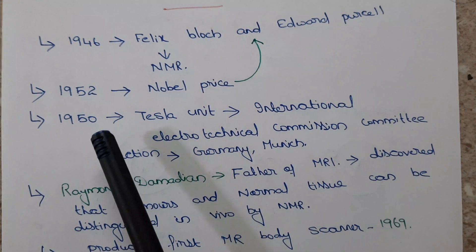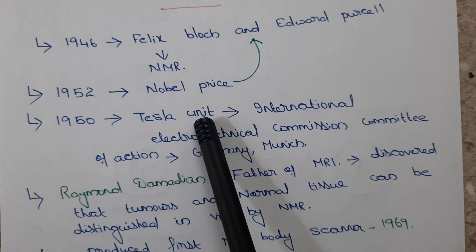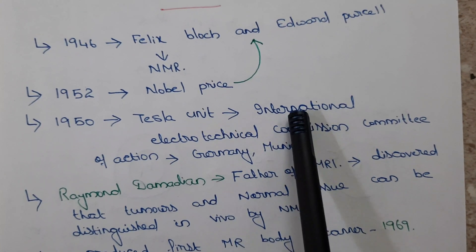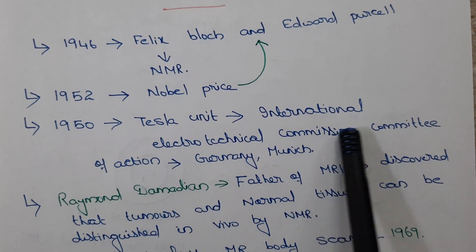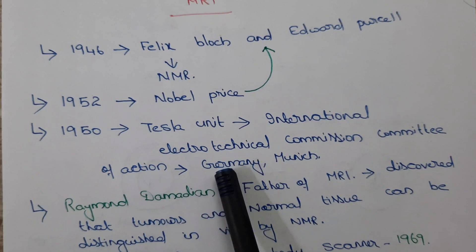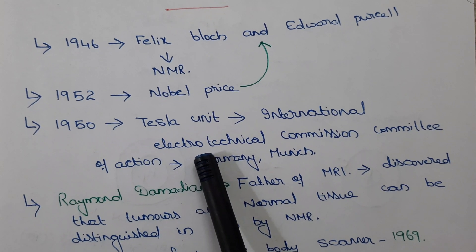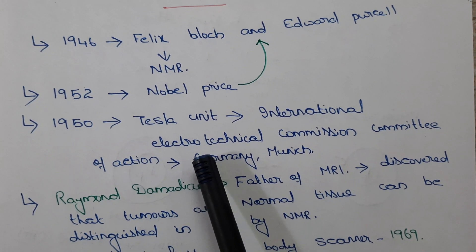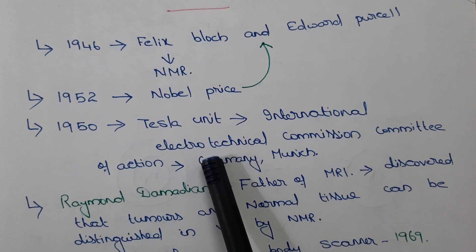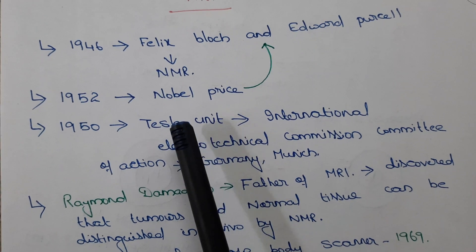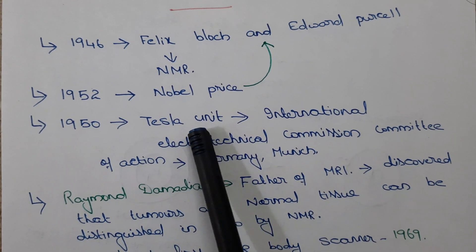Then in the year 1950 the unit called Tesla was invented by the International Electrotechnical Commission Committee of Action, Germany, Munich. We know that the strength or magnetic intensity of an MRI machine is measured by the unit called Tesla.